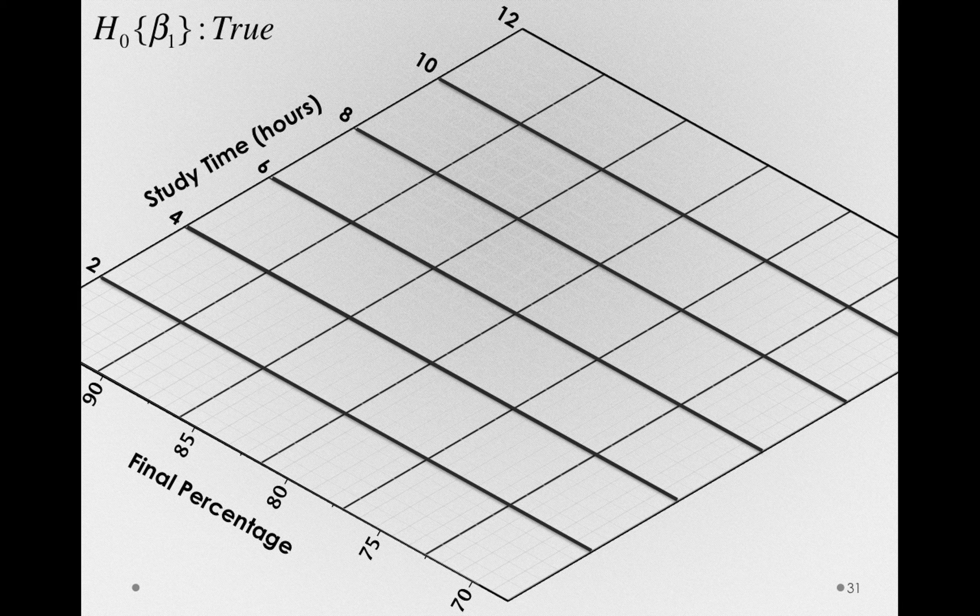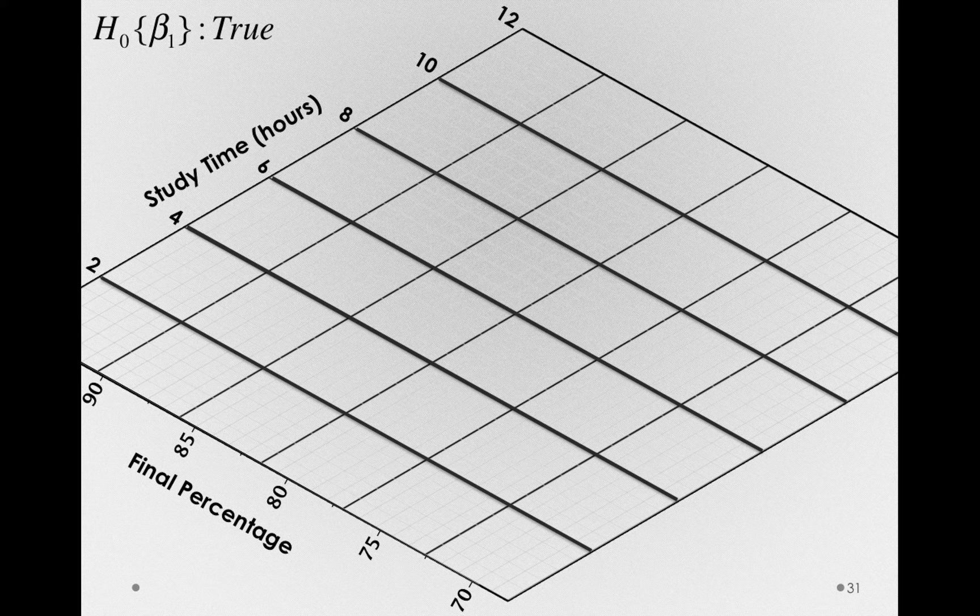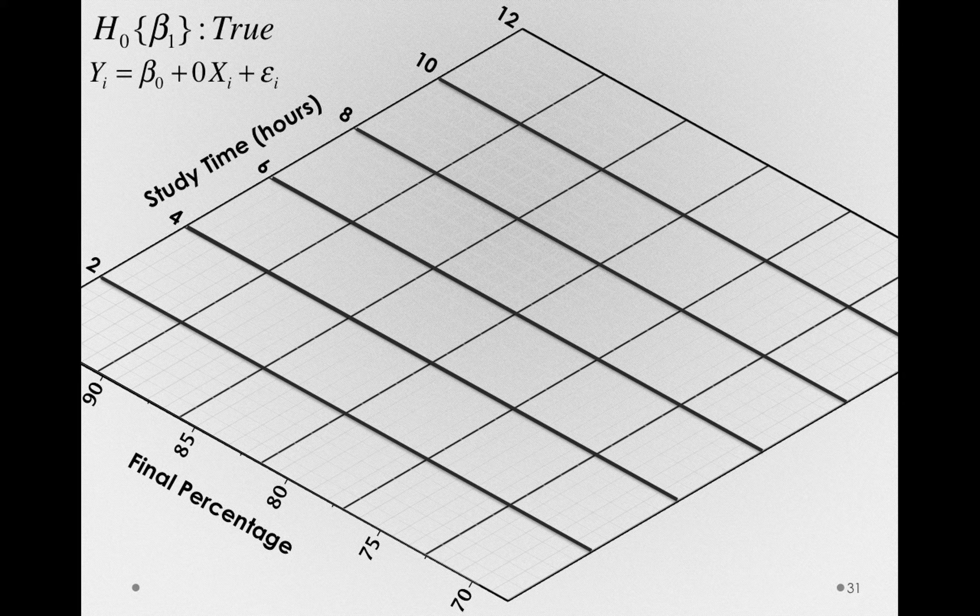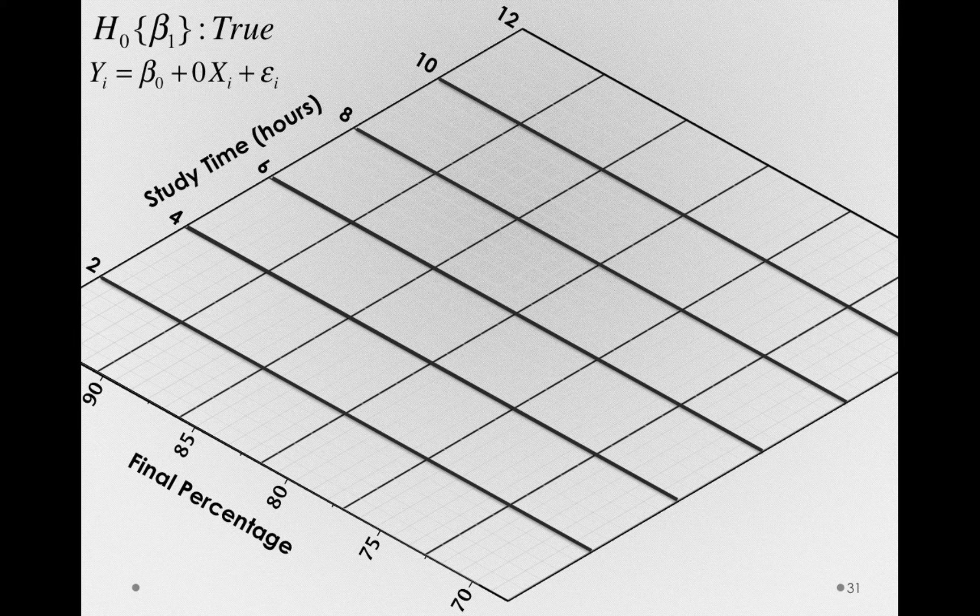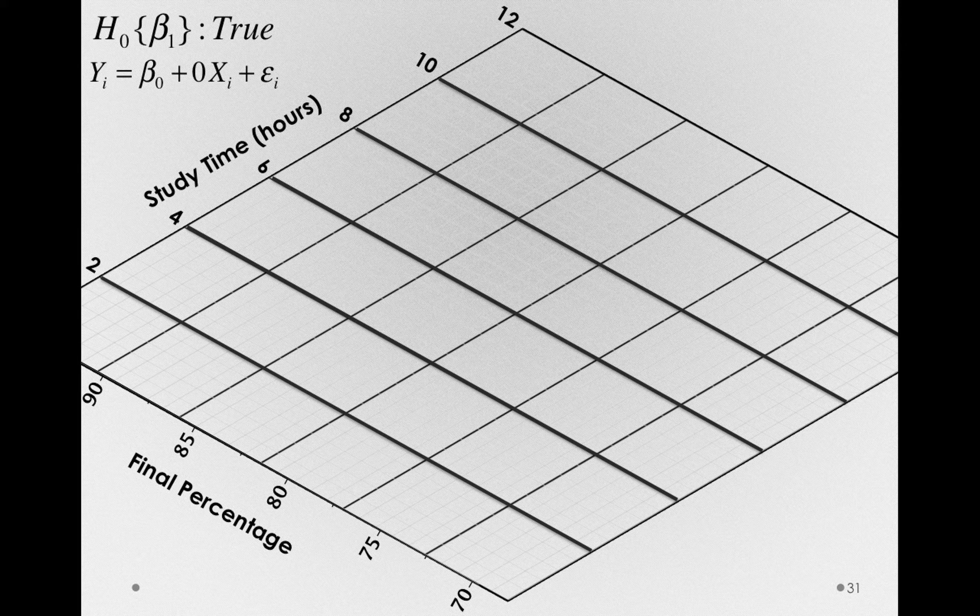Here again we have study time and final percentage. What we're really asserting, if the null hypothesis is true, is that the regression line in the population could be written as beta0 plus zero times xi plus epsilon. That is, one unit change in x has no effect on the y-scores.